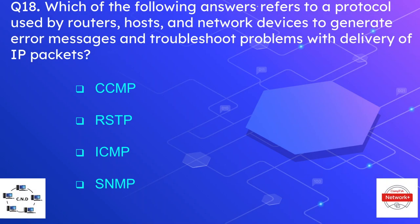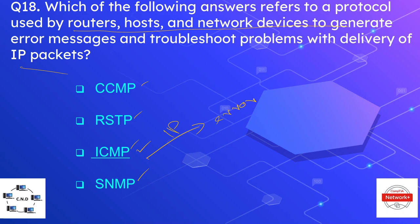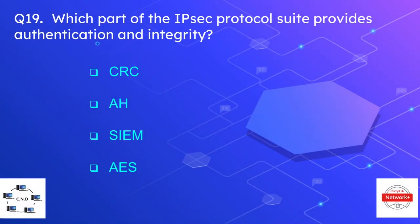Question number eighteen is: which network protocol enables routers, hosts, and network devices to generate error messages and troubleshoot problems with the delivery of IP packets? The options are CCMP, RSTP, ICMP, and SNMP. The correct option is ICMP, or Internet Control Message Protocol — a helper protocol for IP that provides error codes and messages when there are problems with data delivery.